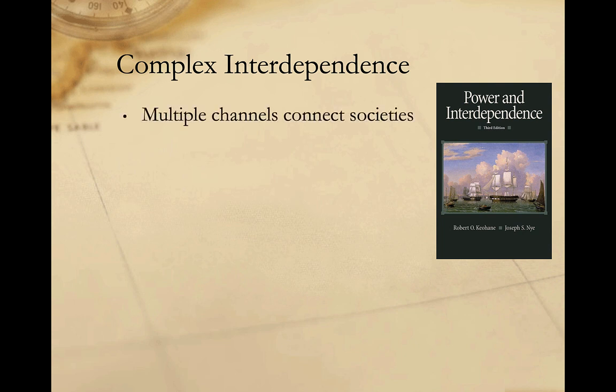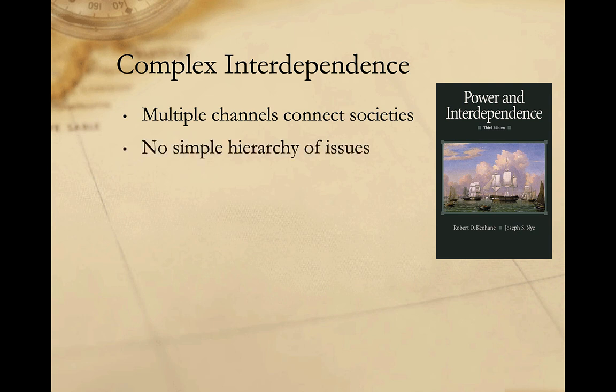There are three main characteristics of complex interdependence. First, multiple channels connect societies. Relations between states are not simply a matter of government-to-government relations; societies are connected through informal ties between non-governmental elites, relations between transnational corporations and local economies, connections across civil society, and personal connections between private individuals. Second, the issues that states deal with are not simply or clearly organized in a hierarchy. Military security is not always the state's number one objective — economic, political, social, cultural, and other issues may dominate decision-making at a particular moment in time. As a result, states are constantly involved in trade-offs across policy issue areas at different moments.